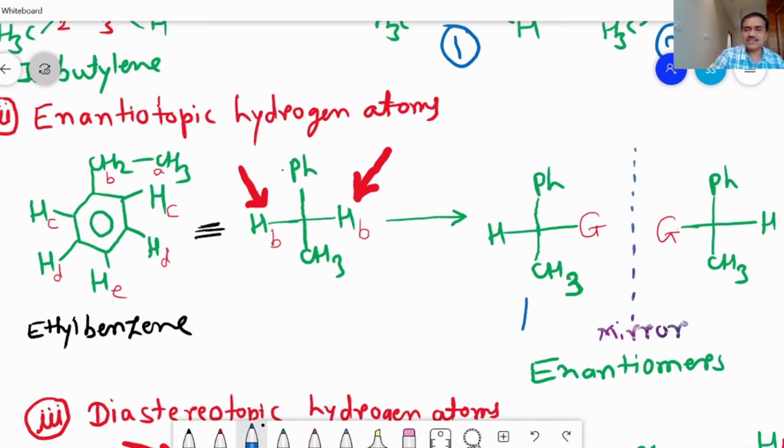And we got two structures, that is A and B. And this A and B are having the relationship - they are non-superimposable when we put the mirror in between. And as they are enantiomers, so such type of protons is called enantiotopic hydrogen atoms.